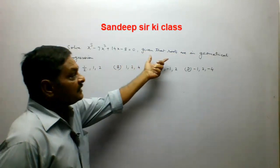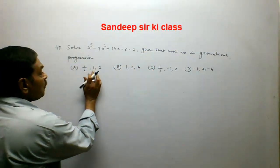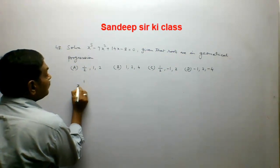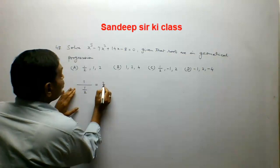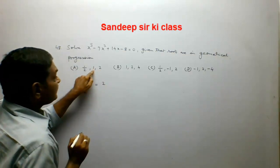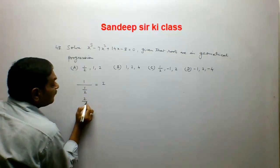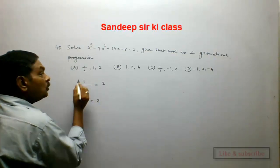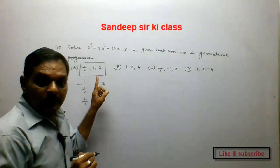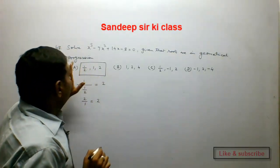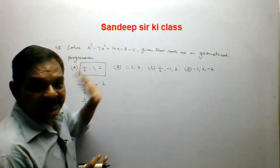We apply the condition that the roots are in geometrical progression. The common ratio from 1/2 to 1 is 2, and from 1 to 2 is also 2. So the numbers in option A are in geometrical progression — the second condition is satisfied.